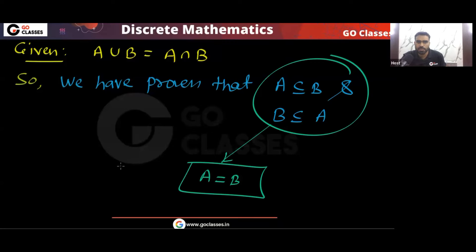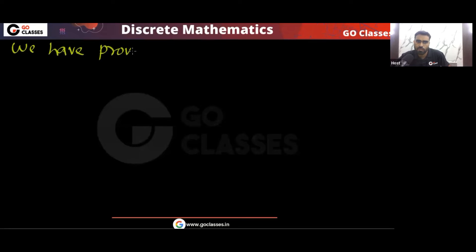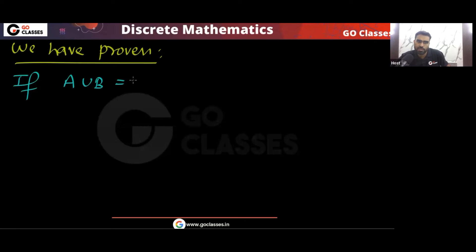So this is proof number two — is this clear? The same question can be done by multiple methods. Now let me tell you one thing: we have proven that if A union B equals A intersection B, then A equals B. Is the converse true? Is the other side also true?